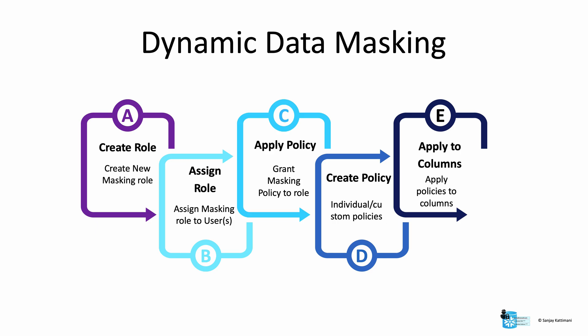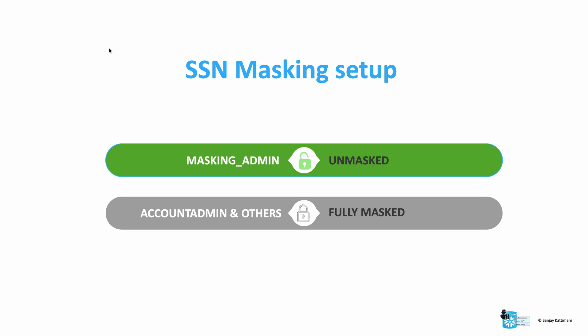We will take a look at a detailed demo on each of these steps. Let's go over the setup of how we would like to see email ID and SSN masked for different roles. Our masking setup for social security number will be as follows: it will be fully visible or unmasked only for masking admin role users, and everyone else including account admin, security admin etc. gets to see a fully masked social security number.